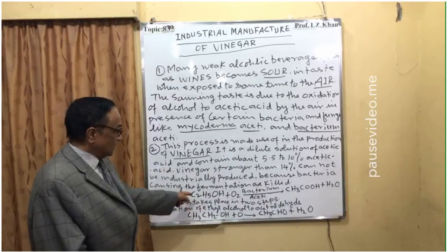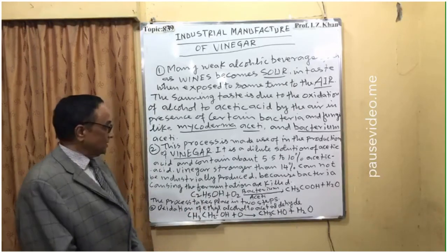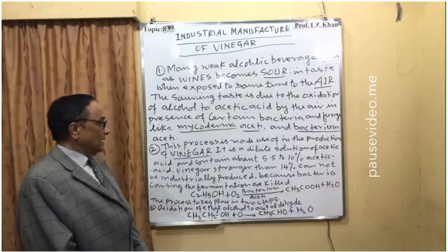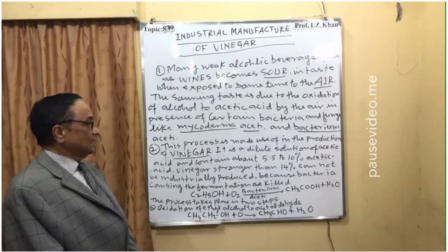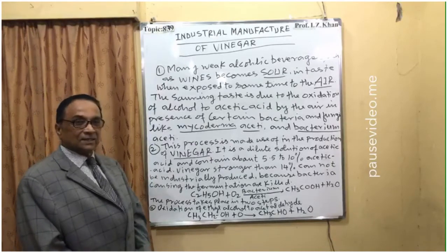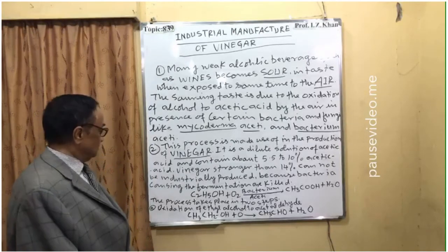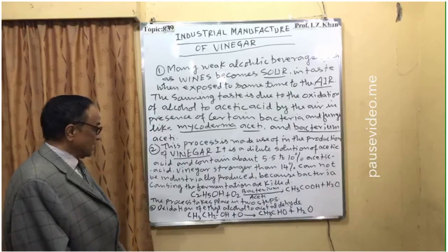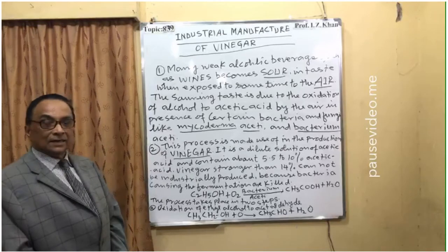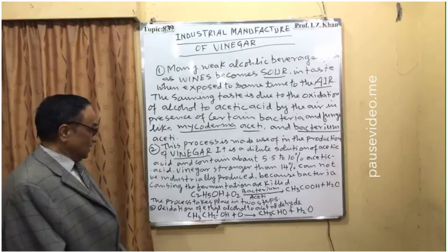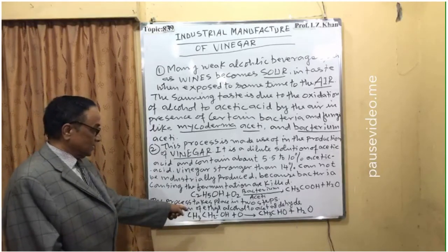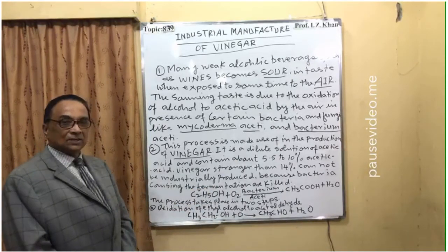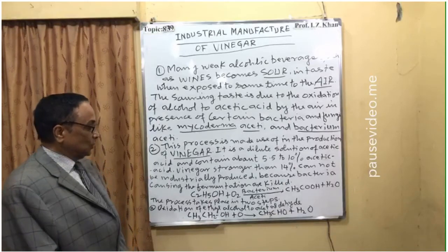The conversion is: ethyl alcohol (C₂H₅OH) plus O₂, in the presence of bacteria, is converted into acetic acid (CH₃COOH) plus H₂O. The process takes place in two steps. Step A: oxidation of ethyl alcohol into acetaldehyde. That is: CH₃CH₂OH plus O is converted into CH₃CHO plus H₂O — that is acetaldehyde.